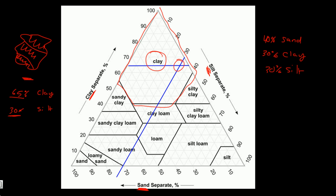Let's do it in red. You go to sand first. Sand is down here. 40% is right here. You draw a line that's parallel to the direction the numbers are written in. That's 40% sand.